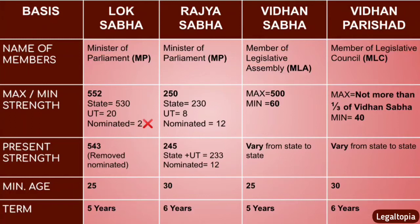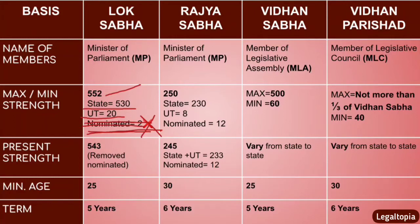Now, Maximum and Minimum Strength. Lok Sabha's maximum strength is 552: 530 from states, 20 from Union Territories, and 2 nominated members (originally Anglo-Indians). The provision for 2 nominated members has since been quashed, but the constitutional maximum remains 552. So in the exam, write 552 as the maximum strength of Lok Sabha, not 550. Rajya Sabha's maximum is 250: 230 states, 8 Union Territories, and 12 nominated members.